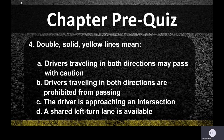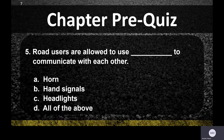Question four: a double solid yellow line means — drivers traveling in both directions may pass with caution; drivers passing in both directions are prohibited from passing; the driver is approaching an intersection; or a shared left turn lane is available. Question five: road users are allowed to use blank to communicate with each other — A, a horn; B, hand signals; C, headlights; D, all of the above.